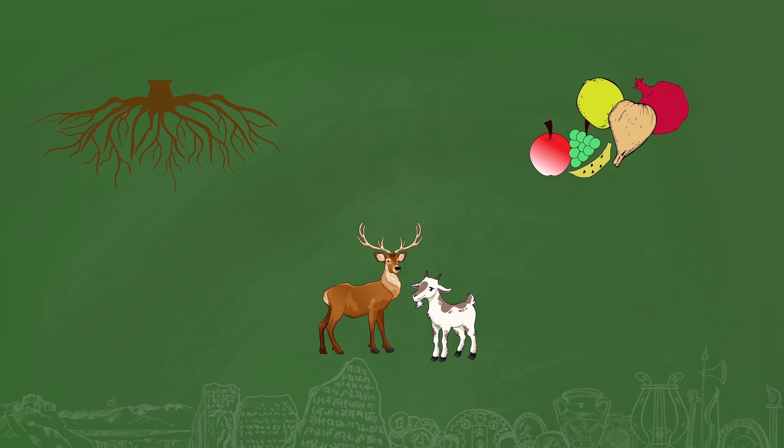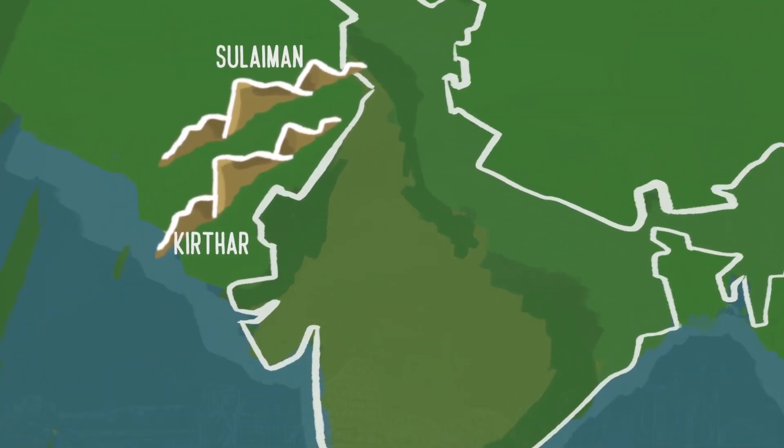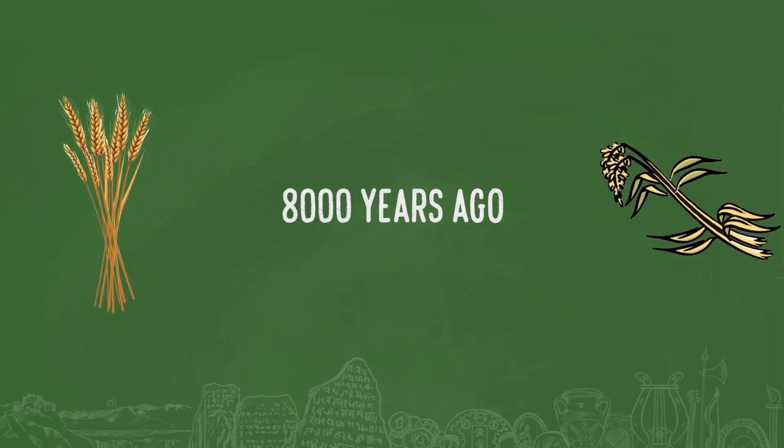Now locate Suleiman and Kirthar hills in the northwest. Some of the areas where women and men first began to grow crops such as wheat and barley about 8000 years ago are located here.